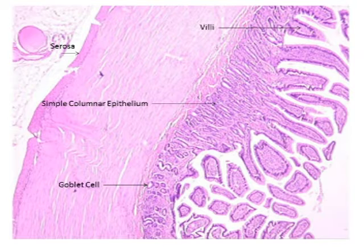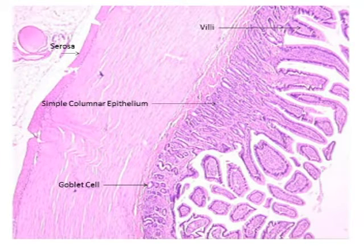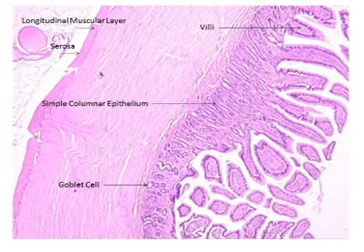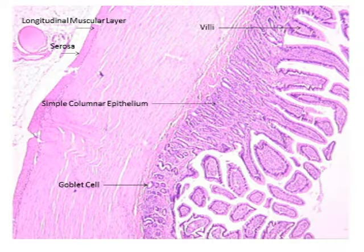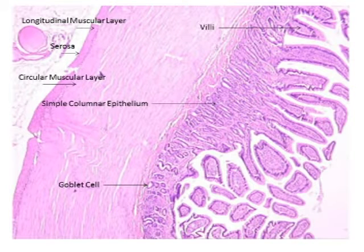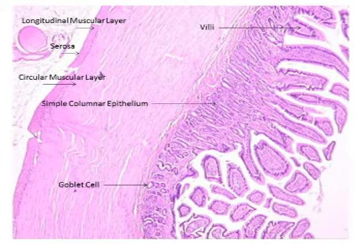You have the serosa again, which is the outside thin layer. Right next to the serosa, you have the longitudinal muscular layer, which is the darker colored one after the serosa. The circular muscular layer is right next to the longitudinal muscular layer and is a little bit lighter and not as compact as the longitudinal muscular layer.